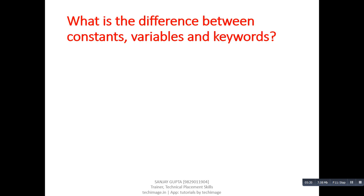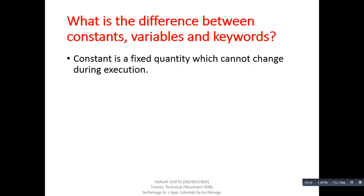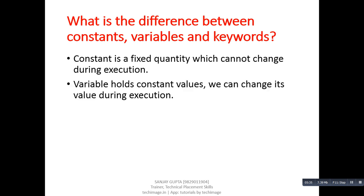Next question: what is the difference between constants, variables, and keywords? Answer: a constant is a fixed quantity which cannot change during execution. A variable holds constant values and we can change its value during execution. Keywords are known as reserved words.